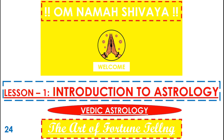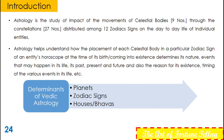Astrology is the study of the impact of movements of celestial bodies or planets — which are nine planets — through 27 constellations, distributed among 12 zodiac signs, on the day-to-day life of an individual entity. I call them entities because they can be human beings, animals, any corporation, a state, a country, any organization, institution, etc.